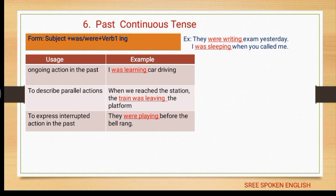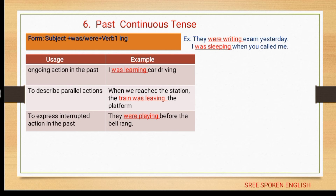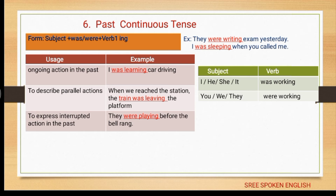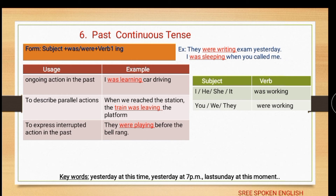The past continuous tense is used for an ongoing action in the past: 'I was learning car driving for two weeks'. To describe parallel actions: 'when we reached the station, the train was leaving the platform'. To express an interrupted action in the past: 'they were playing before the bell rang'. The subject chart shows: I, he, she, it take 'was'; you, we, they take 'were'. Keywords: yesterday at this time, yesterday at 7 pm, last Sunday at this moment.